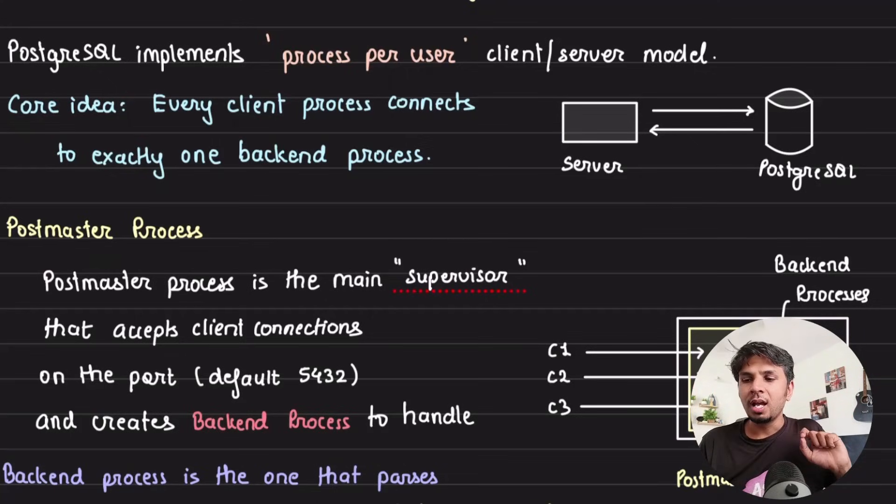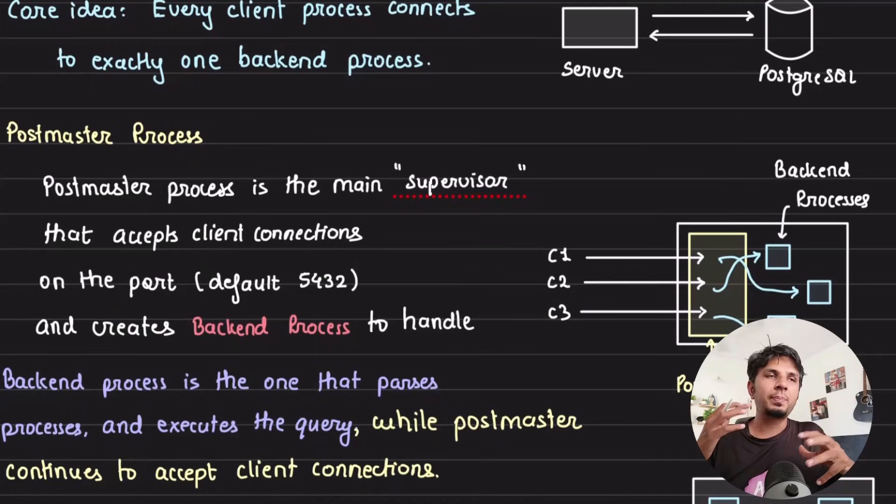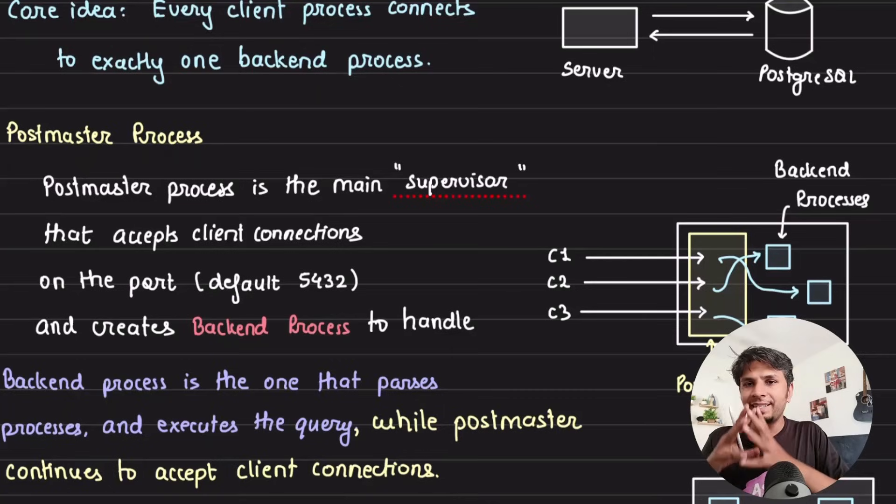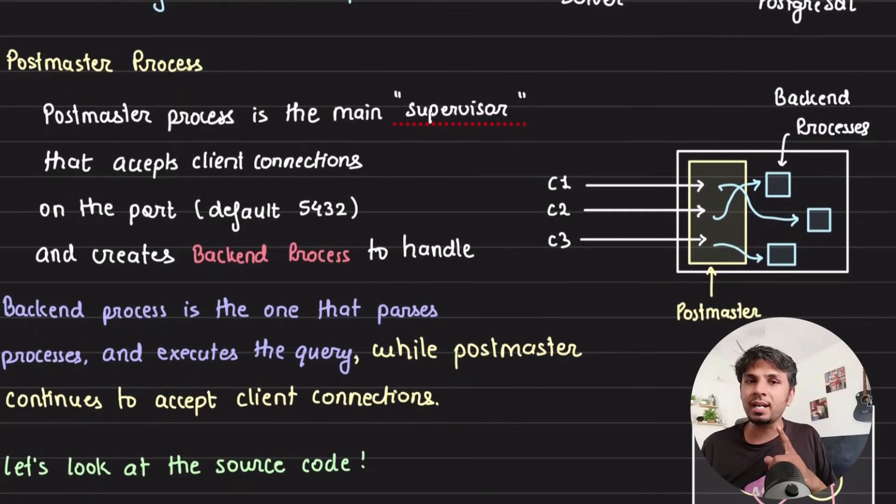When a Postgres server starts, it is listening on a particular port, let's say 5432. One process can listen to that port, so this main process that is listening to that port is called the postmaster process. The postmaster process is the main supervisor process that is accepting the connections from the client. When a client connects to it, it forks out a child process to handle that corresponding client.